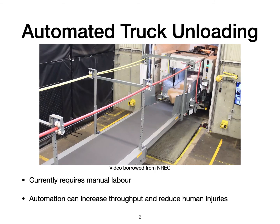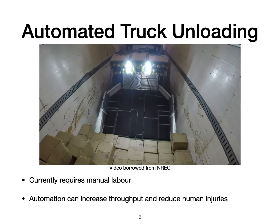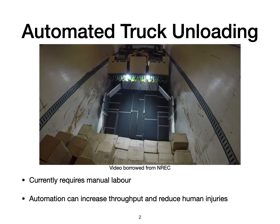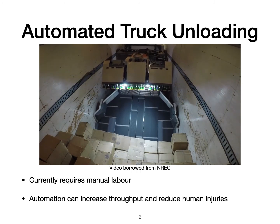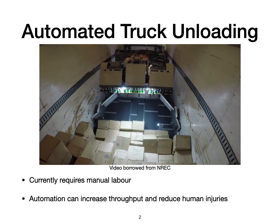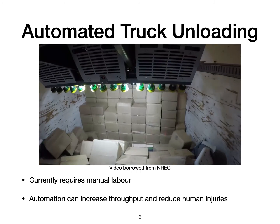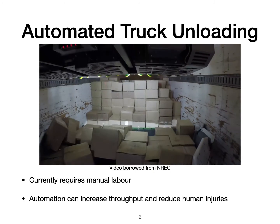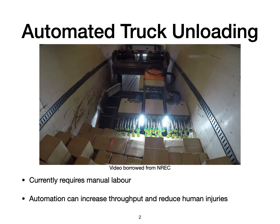In this work, we tackle the problem of automating truck unloading using a custom built robot that you can see in this video. The robot has two end effectors: an arm with a suction array that can be used to pick boxes and drop them on a conveyor, and a nose which can be used to scoop the boxes on the floor of the truck. This makes the robot ideal for truck unloading.